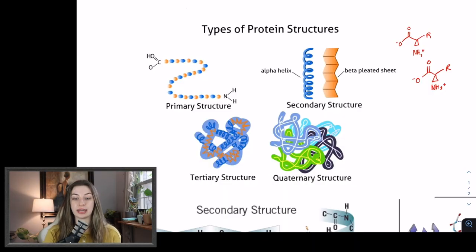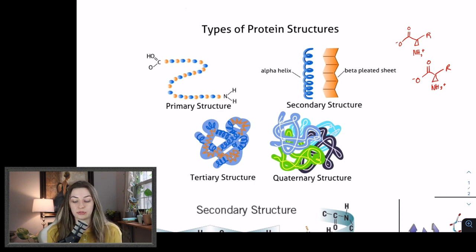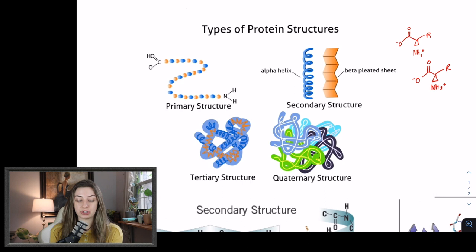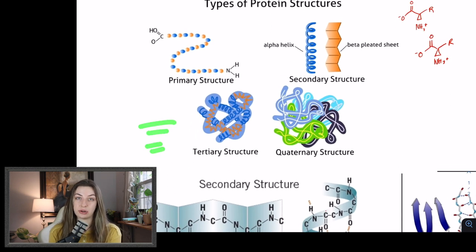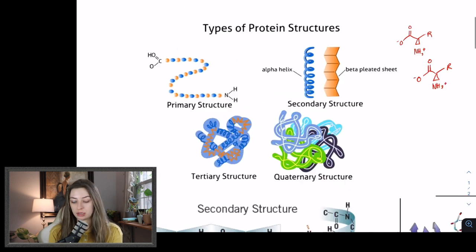So without further ado, I want to go ahead and get into protein structure. When I talk about protein structure I mean primary, secondary, tertiary, and quaternary — these should be terms you're familiar with if you've taken biochemistry or even some biology or chemistry classes. I pulled this graphic from our book to illustrate what I'm talking about. As an outline: primary structure is the most simple, secondary structure covers alpha helices and beta pleated sheets, tertiary structure has a lot of things under it, and quaternary structure we'll briefly touch on because it's not as high yield.